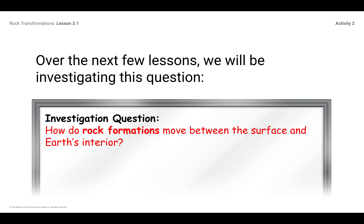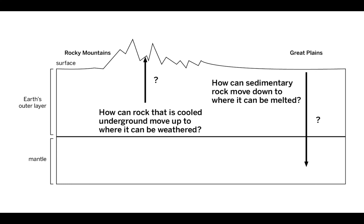The investigation question is: how do rock formations move between the surface and Earth's interior? Remember, a rock formation is one large area of rock — not just one single rock. Think of the Grand Canyon as one rock formation, or the Rocky Mountains as a rock formation — a huge area of one type of rock. We're going to find out how these rocks either move to the surface or how they move down to the interior, which is exactly what we were talking about: how can rock cooled underground move up, and how can rock on the surface go down below where it can be melted?